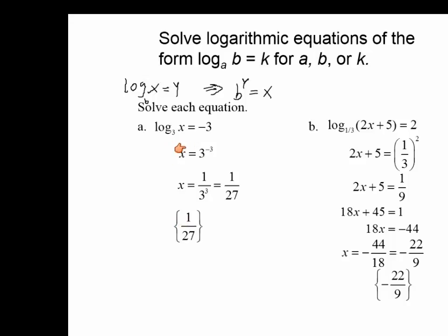That's all we did — converting this logarithm to its exponential function to solve for x. Here's another example. In this case, the base is 1 over 3. So we say 1 third to the power of 2 must be equal to the expression 2x plus 5. Here we're converting the logarithm into exponential.